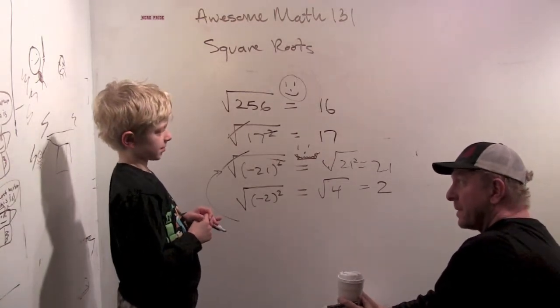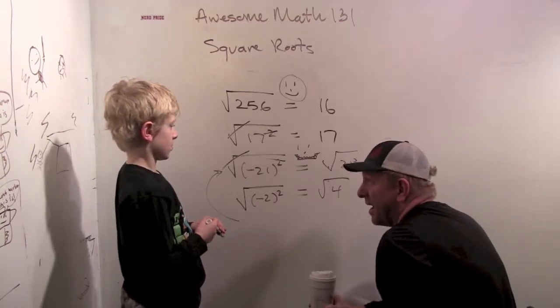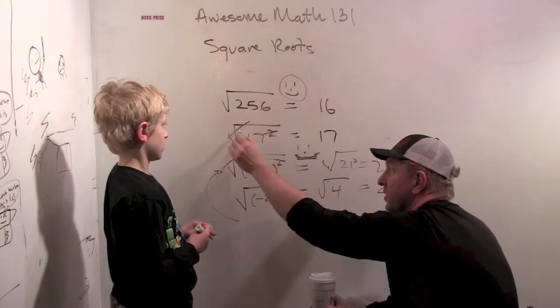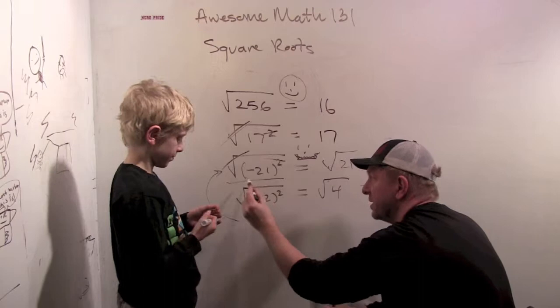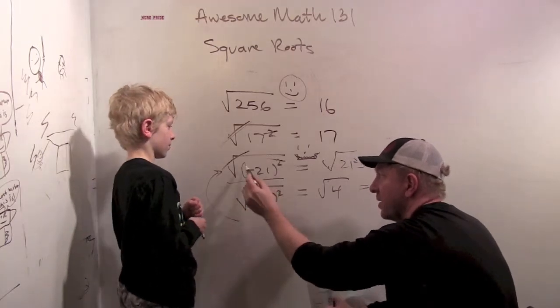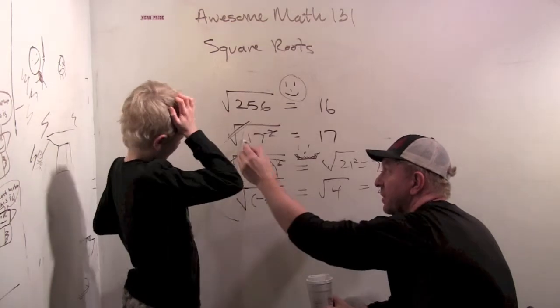So while you can sometimes think about the square root and the square canceling, sometimes you can. You can't always because here what happens is the squaring operation actually does something to this number.